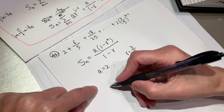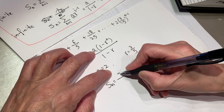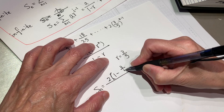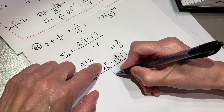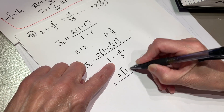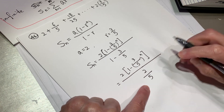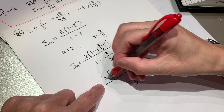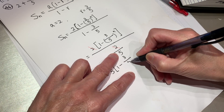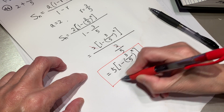And now, S_n equals a — replace a with 2 — times 1 minus, replace r with 3 over 5 to the power of n, over 1 minus 3 over 5. On the bottom is 2 over 5. The 2 and 2 can cross-cancel, and this 5 flips up. Equal to 5 times 1 minus 3 over 5 to the power of n. And that is the result for question 46.